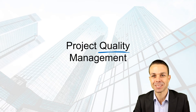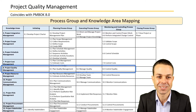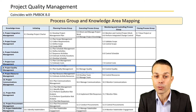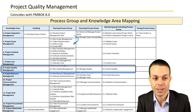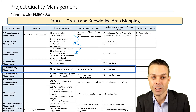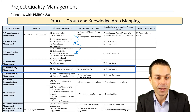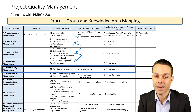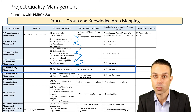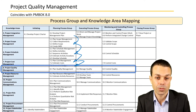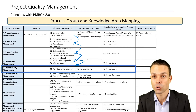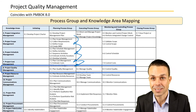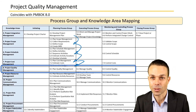As you can see, we're making our way through: first we create our scope — what we're delivering — then when we're delivering it with the schedule, and then how much it's going to cost. Now we need to manage that quality and create the quality management plan so that we can make sure those deliverables are what we intended and that the customer gets what they want.